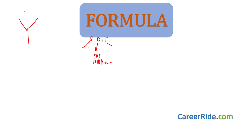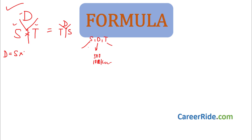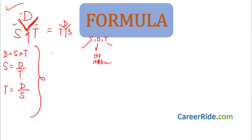Speed and time can be written in either of the two lower arms of the Y — speed here and time there, or time here and speed there; both arrangements are the same. So just draw a Y and write Distance at the top, Speed and Time at the bottom. The formulas follow directly: Distance = Speed × Time; Speed = Distance ÷ Time; Time = Distance ÷ Speed. In the exam, at the start just draw this DST Y in your rough work so you can always refer back to the correct formula.